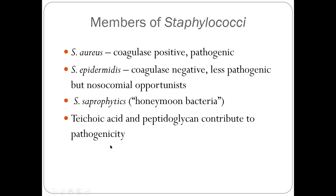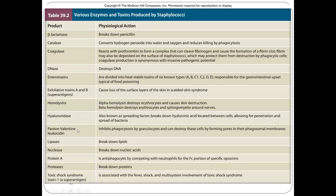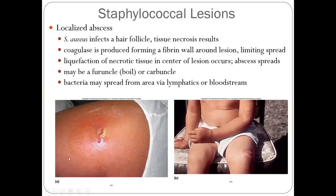Peptidoglycan can contribute to positive pathogenicity. The following slides show how invasive Staphylococcus is — it produces so many enzymes that break down tissue and blood vessels. Staphylococcus aureus infections can first happen on the skin surface. Coagulase forms a fibrin wall around the lesion, limiting initial spread. But then bacteria spread via the lymphatic system and bloodstream because of how invasive they are.